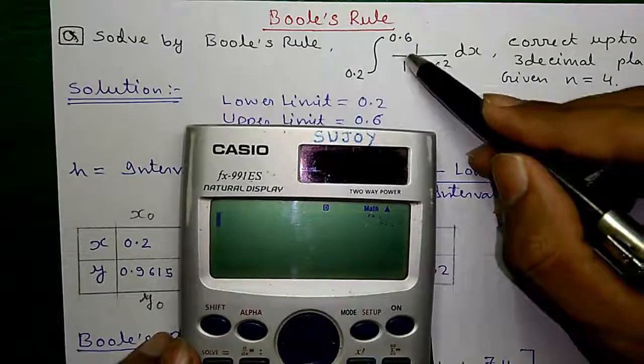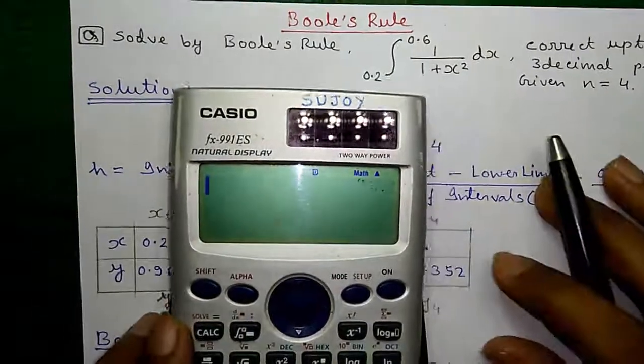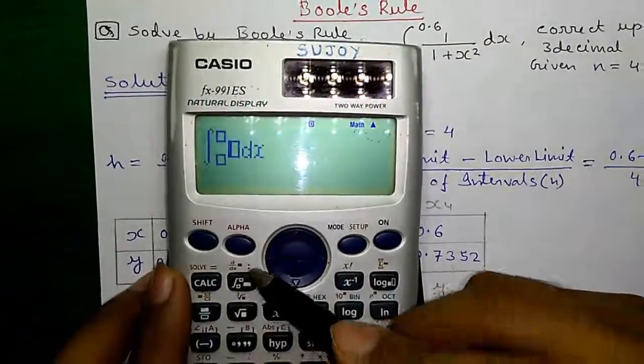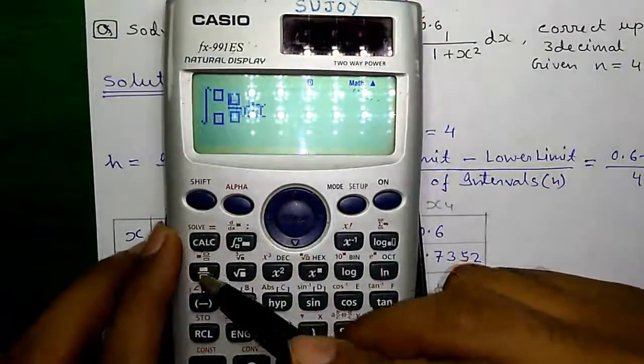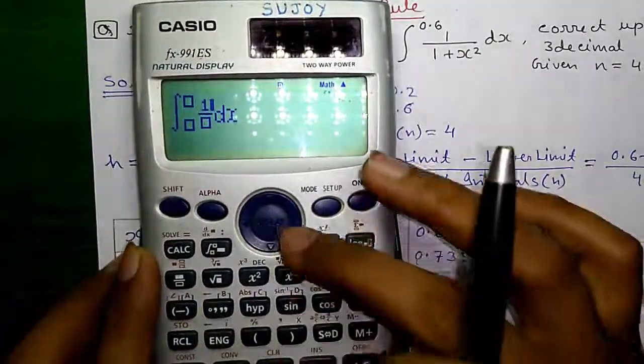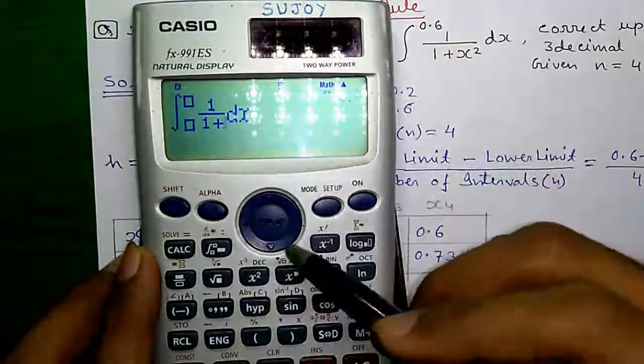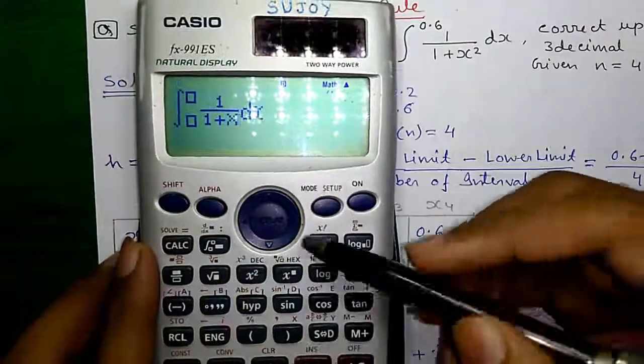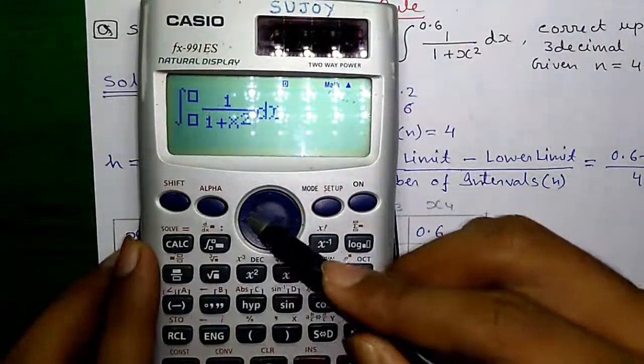First of all, let me show you how to do it directly on this calculator. Press the integration button, then the fraction button: 1 divided by 1 plus, press alpha and this button for x, and this button for square.